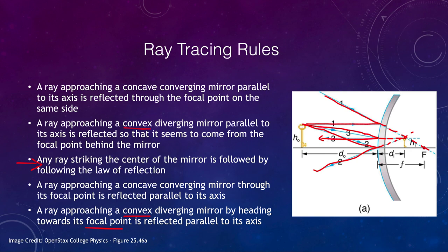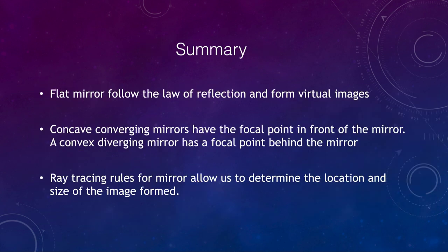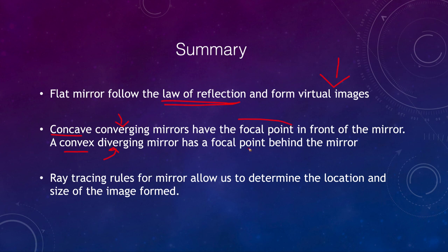Let's finish up with a summary. Flat mirrors follow the law of reflection — the angle of incidence equals the angle of reflection — and they form virtual images. Concave mirrors are converging mirrors with a focal point in front of the mirror; convex mirrors are diverging mirrors with the focal point behind the mirror. We also looked at the ray tracing rules for mirrors, which allow us to determine the location and size of the image formed. That concludes this lecture on image formation in mirrors. We'll be back next time for another topic in physical science — have a great day, everyone.